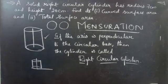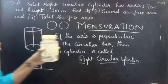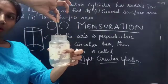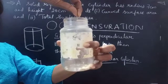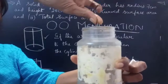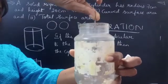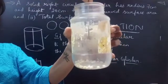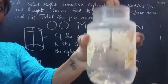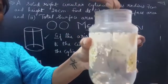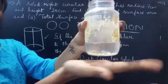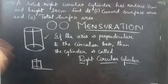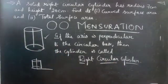For example, you can consider the spoon as an axis — the spoon is perpendicular to the circular base. So we have seen a right circular cylinder. Now coming to the problem.